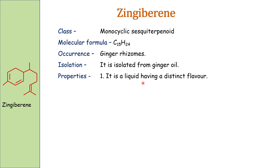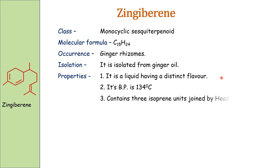Gingivirine is a liquid having a distinct flavor, which is why it is used in recipes. Its boiling point is 134 degrees Celsius. It contains three isoprene units joined in a head-to-tail manner, making it a sesquiterpenoid.